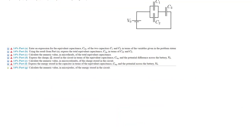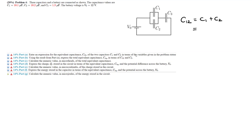Capacitor problem. There's a nice capacitor problem here. Use an expression for the equivalent capacitance C1,2. C1,2 is combining two capacitors in parallel, so C1,2 equals C1 plus C2. With values 10.1 plus 10.2, we get 20.3 microfarads — that's the equivalent capacitance for C1,2.